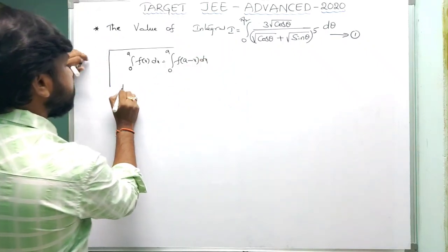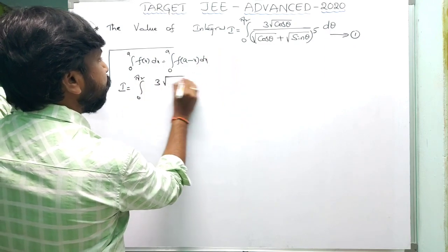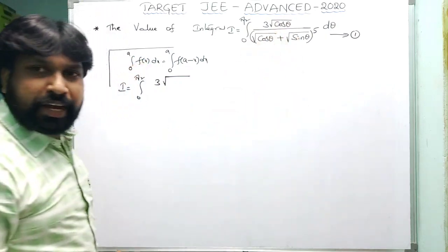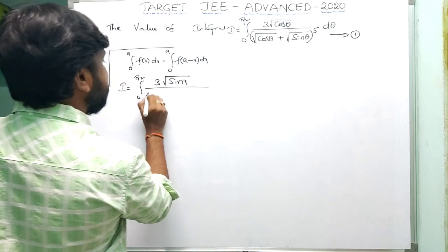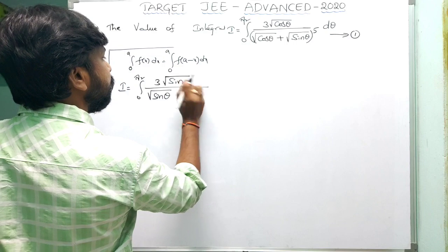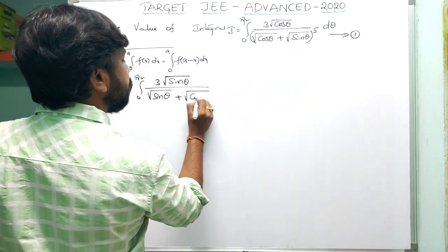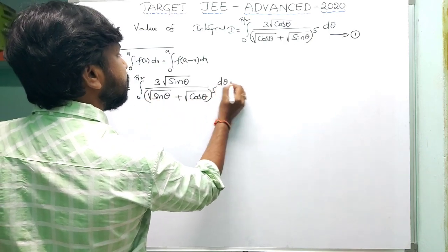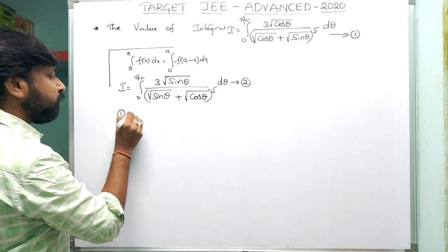Applying this formula, I becomes the integral from 0 to π/2 of (∛(cos(90°−θ))) / (∛(cos(90°−θ)) + ∛(sin(90°−θ)))⁵ dθ. Since cos(90°−θ) = sinθ and sin(90°−θ) = cosθ, this gives equation number 2. Now observe equations 1 and 2 and add them.